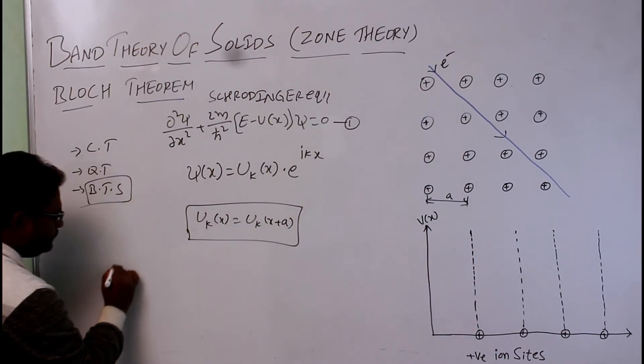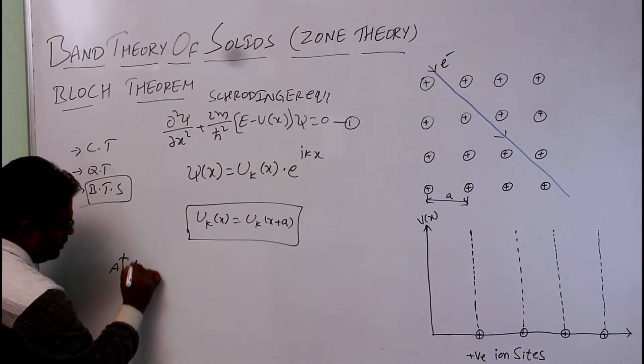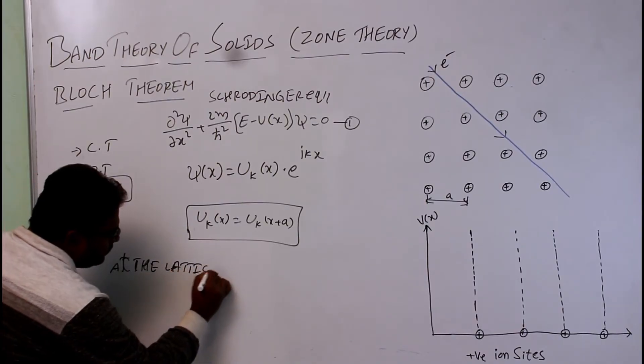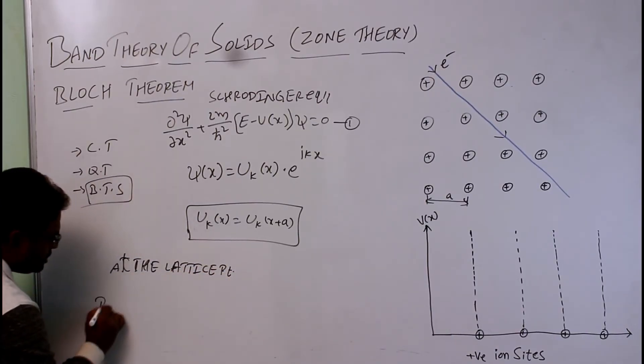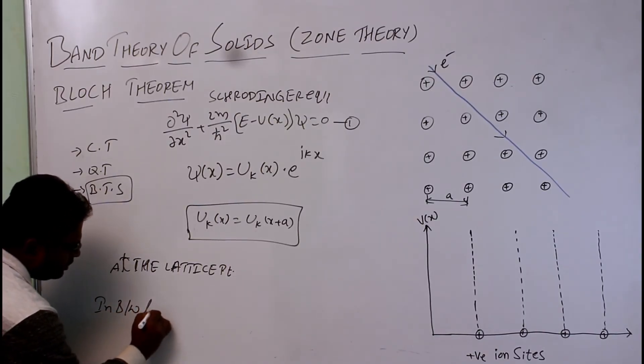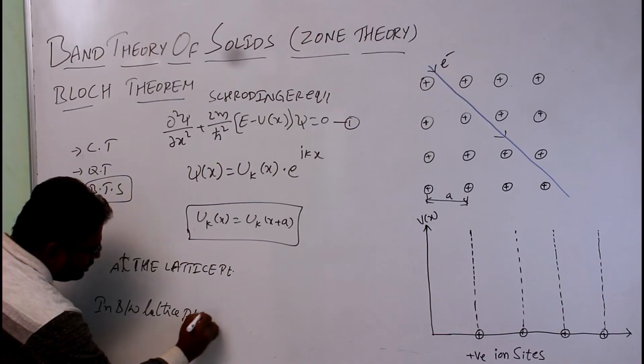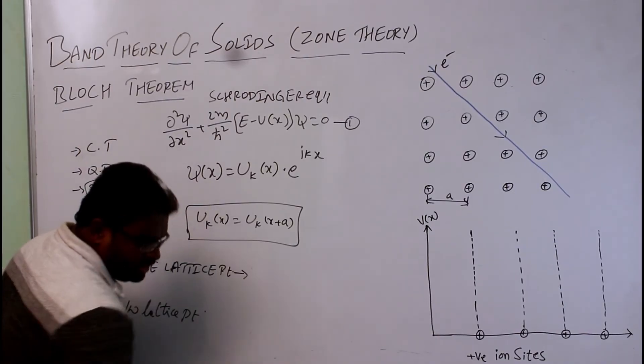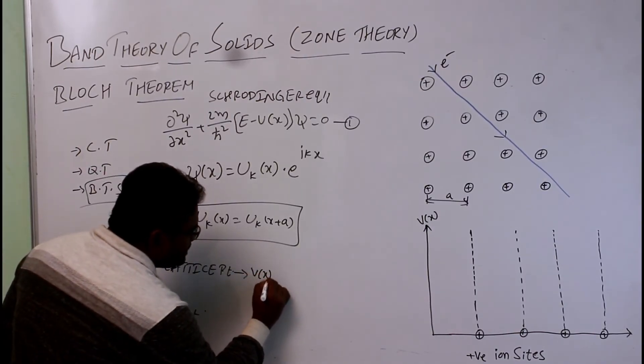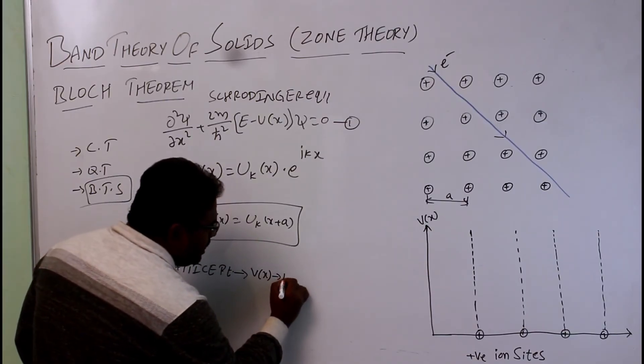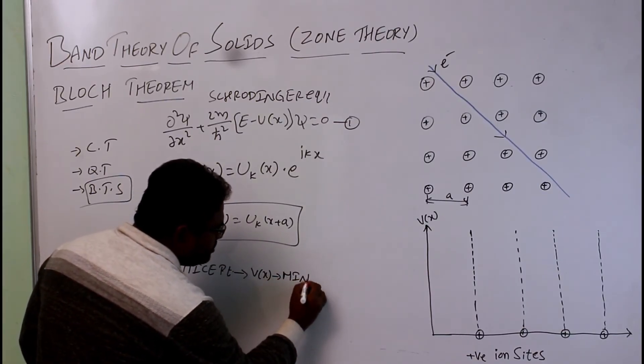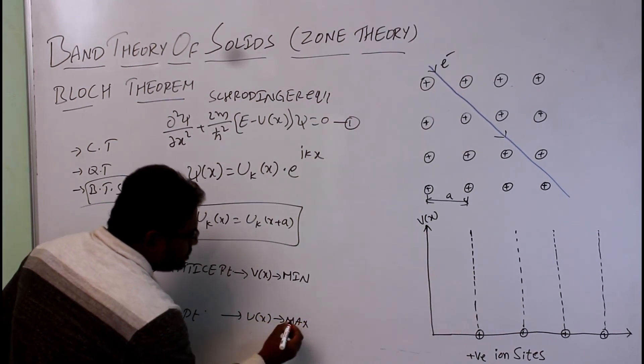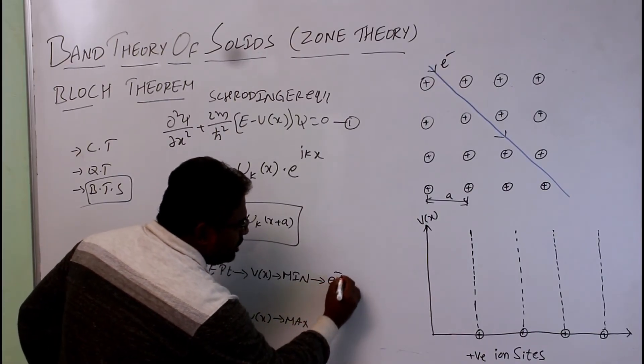The periodicity or the potential graph can be given as, according to Bloch: at the lattice point, the potential V(x) is minimum or sometimes we can use it as zero. In between, the potential V(x) is maximum. If the potential is minimum, the electron can move freely. In between, it cannot move freely.